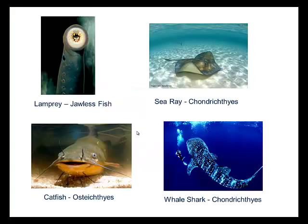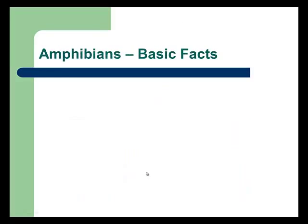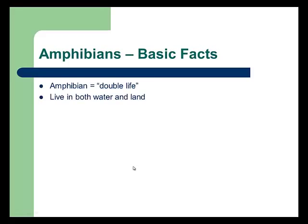Here are the three fish classes visually. The lamprey is the jawless fish and looks pretty distinctive. Chondroichthyes includes the shark and sea rays. Then we have Osteichthyes — normal bony fish like a catfish.